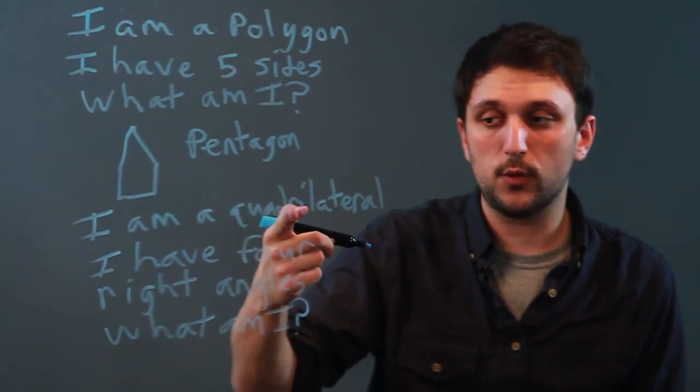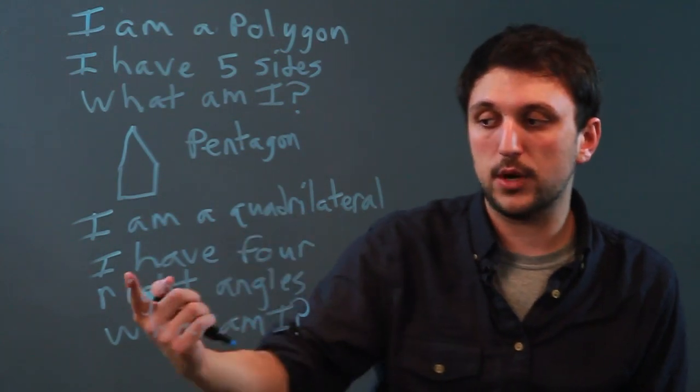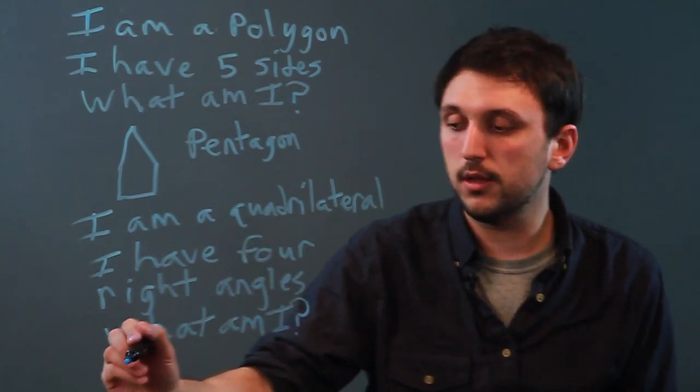Well, a quadrilateral has four sides. And a quadrilateral with four right angles is a rectangle.